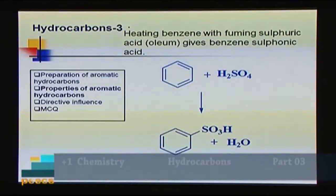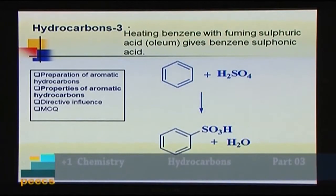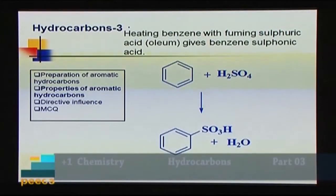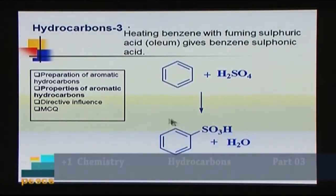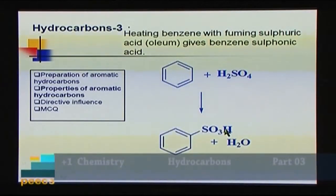Sulfonation means heating benzene with concentrated sulfuric acid — fuming sulfuric acid or oleum. This gives benzene sulfonic acid, where hydrogen is replaced by the sulfonic acid group (–SO₃H). The product is benzene sulfonic acid, and this reaction is called sulfonation.